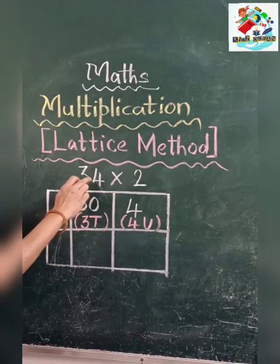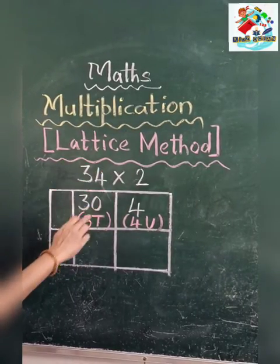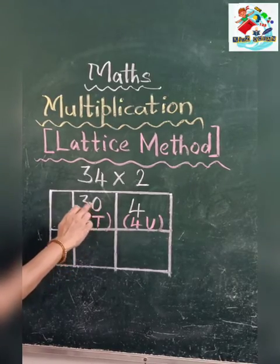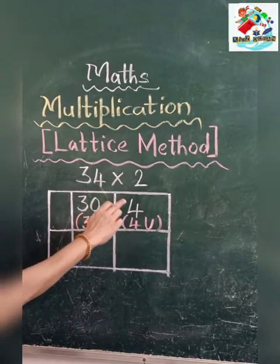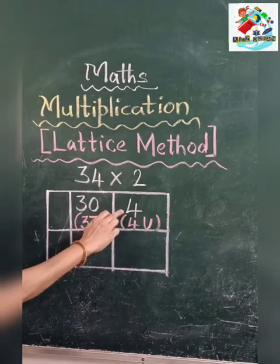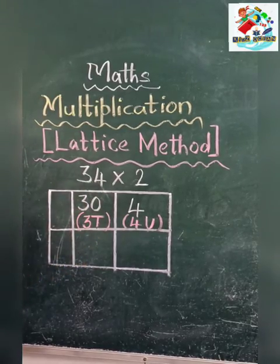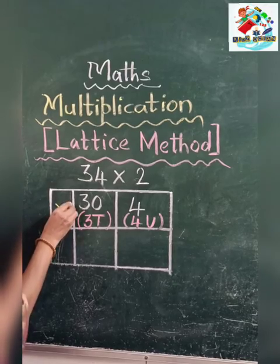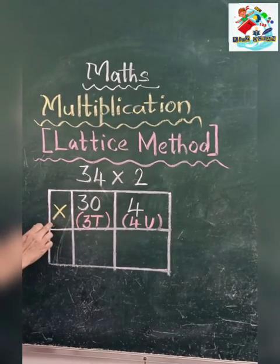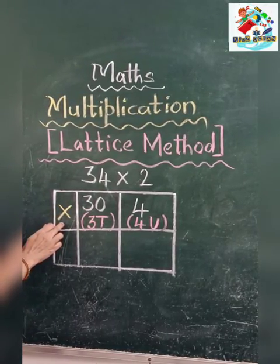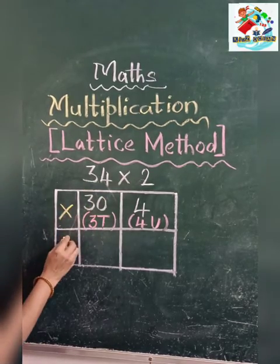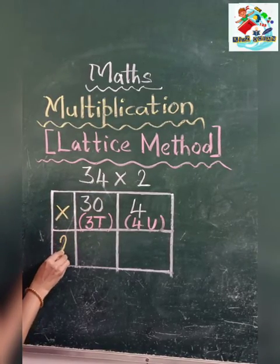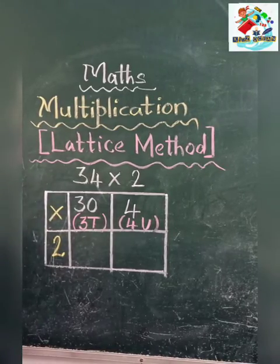The number is 34. So in lattice method we have to break the number like this into tens and units, is it clear children? Then we are going to multiply this number by 2. So this is the symbol of multiplication, isn't it? So by this number we are multiplying, 2. So 34 is multiplied by 2.